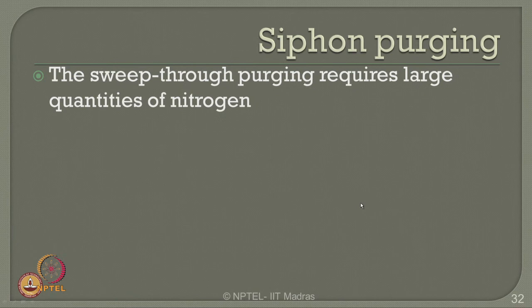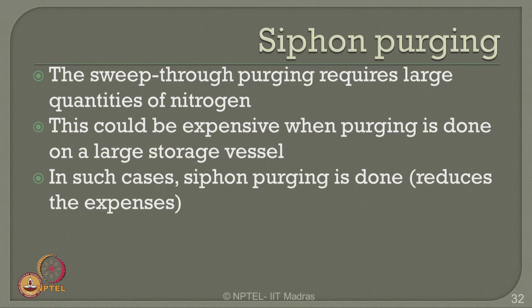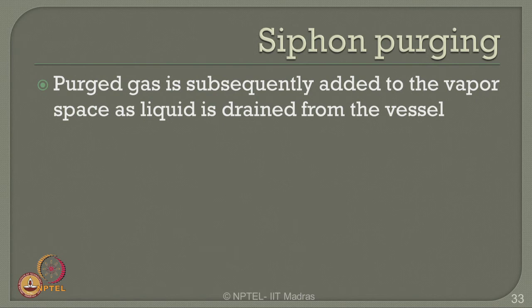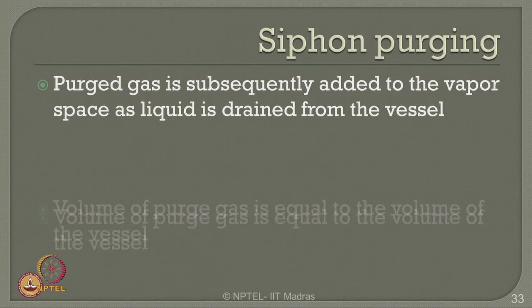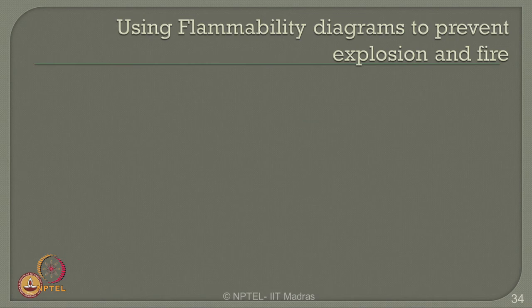One can also do siphon purging as a design method for reducing explosion damages. Sweep-through purging requires large quantities of nitrogen, which could be expensive for large storage vessels. In such cases, siphon purging is used to reduce expense. The purging process starts by filling the vessel with liquid, either water or any other compatible liquid. The purged gas is subsequently added to the vapor space as liquid is drained from the vessel. Volume of purged gas equals the volume of the vessel, and rate of purging equals the volumetric rate of liquid discharge.